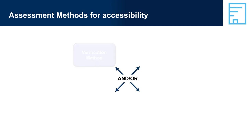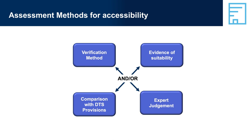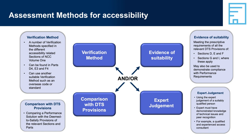Assessment Methods for Accessibility: whether you choose to use a DTS solution or a performance solution, or a combination of both, you may need to provide some evidence that the proposed solution complies with the performance requirements. The NCC recognises four valid ways of assessing possible compliance solutions. All four methods can be used to demonstrate compliance with all or part of the performance requirements when using a performance solution. The various accessibility-related sections and parts of NCC Volume 1 include a number of relevant verification methods, each of which can be used in certain circumstances.